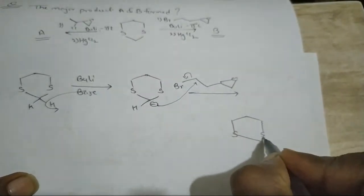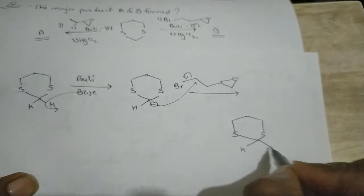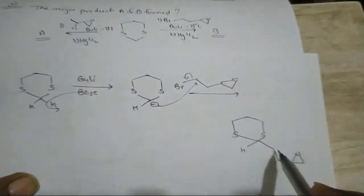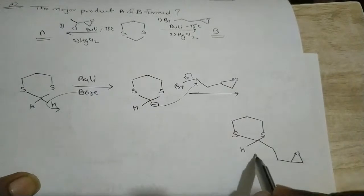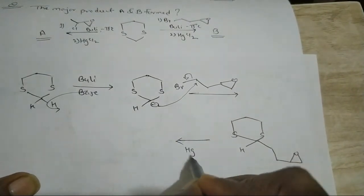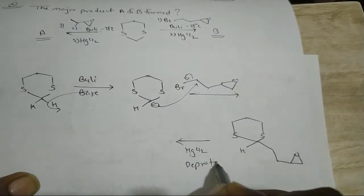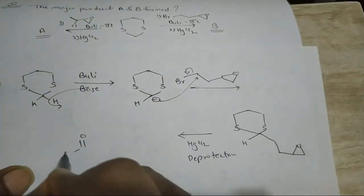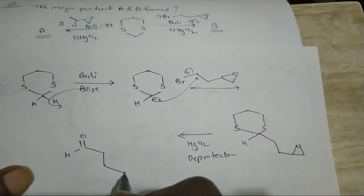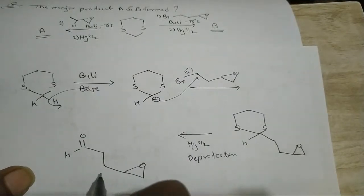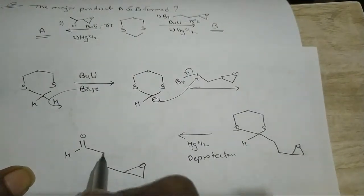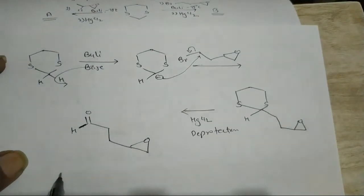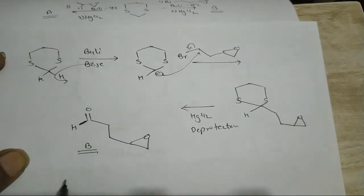You can see this is a 1-2-3-4 carbon chain — counting one, two, three, four. After that, it is treated with HgCl₂, which is the deprotection step. So we get the product with a 1-2-3-4 carbon framework. This is our product B.